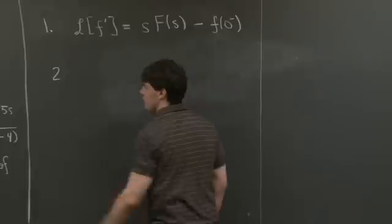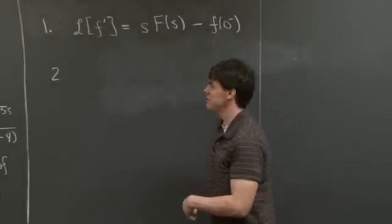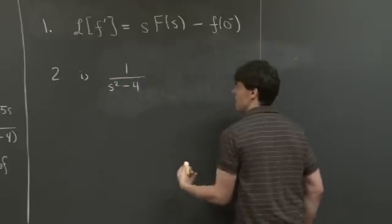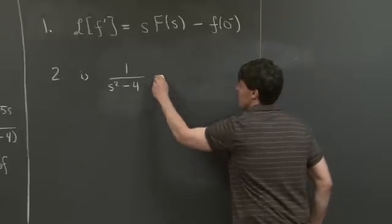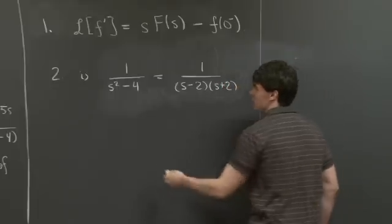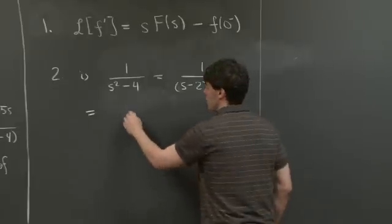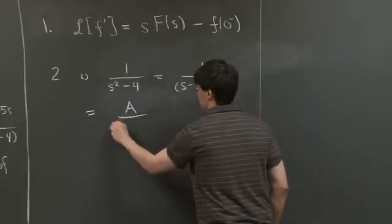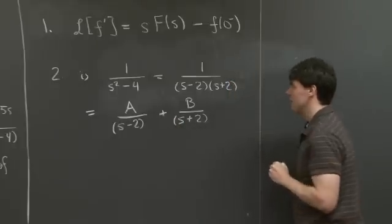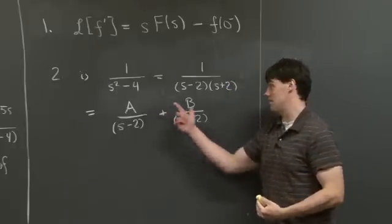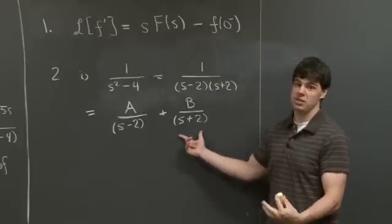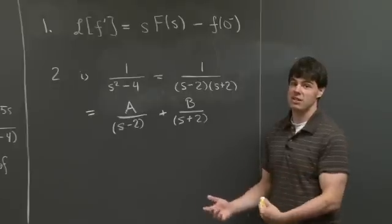For part two, we're asked to find the inverse Laplace transform for three different functions. The first one is 1 over s squared minus 4. We can factor the denominator into 1 over s minus 2 times 1 over s plus 2, which means we can use a partial fraction decomposition of the form a divided by s minus 2 plus b divided by s plus 2. Now we need to solve for the coefficients a and b.